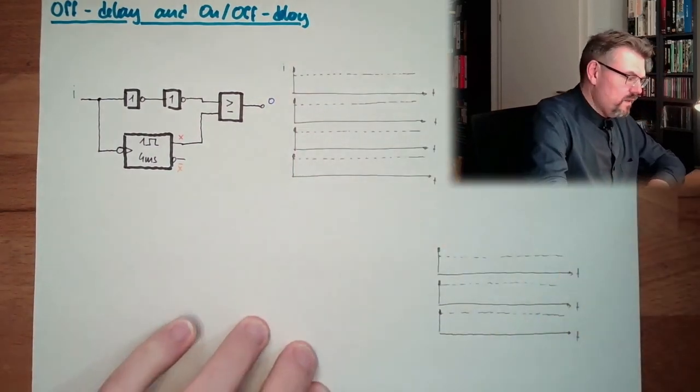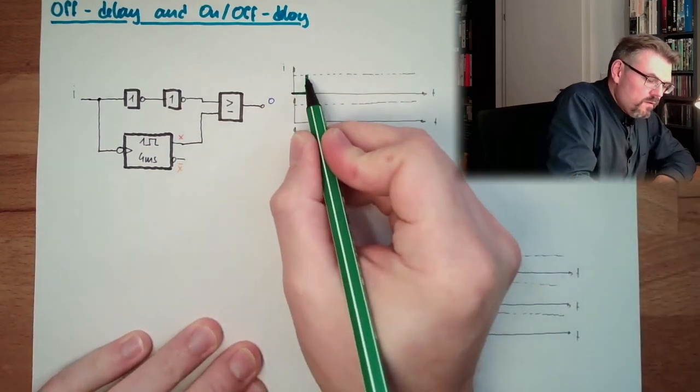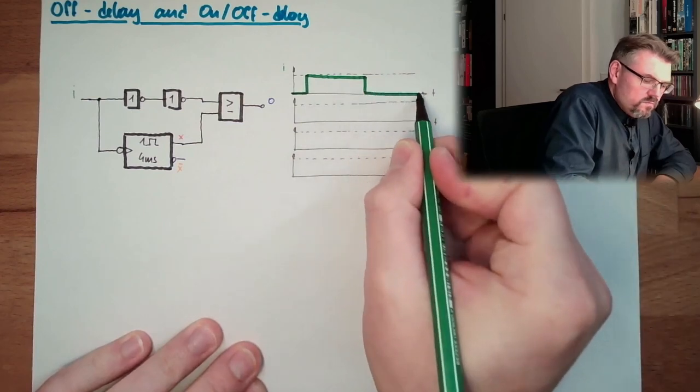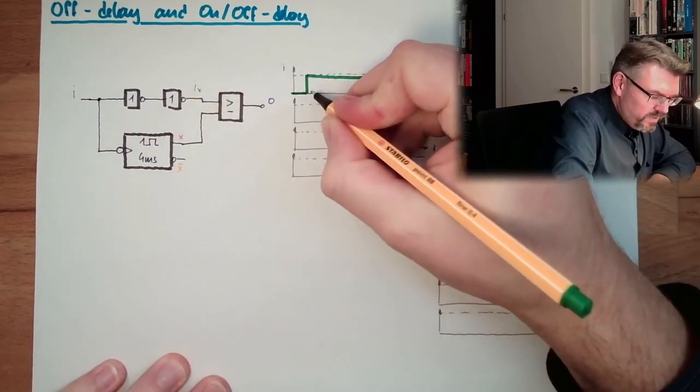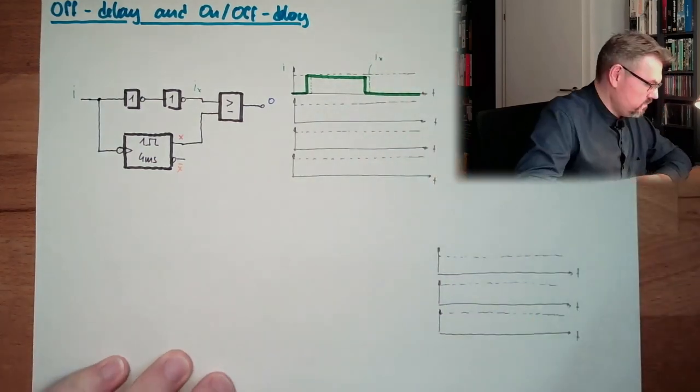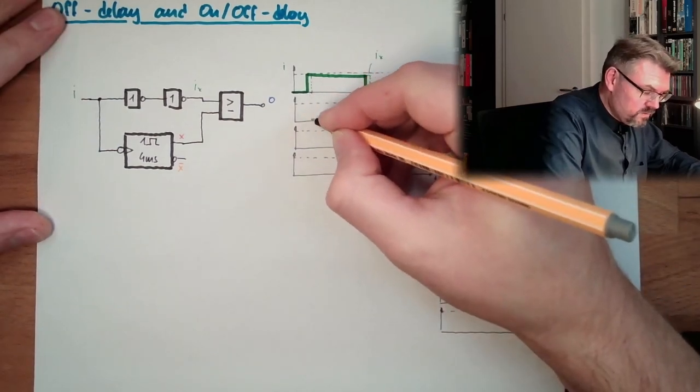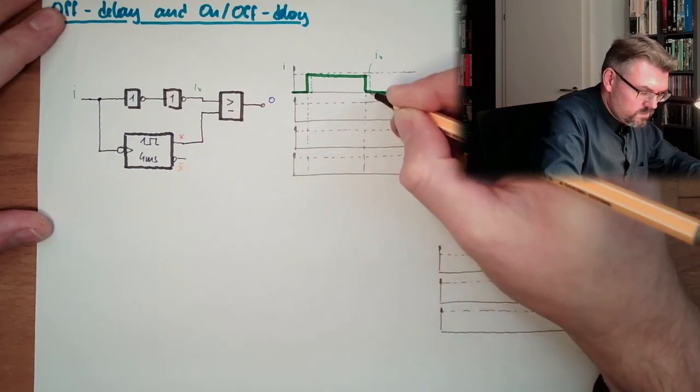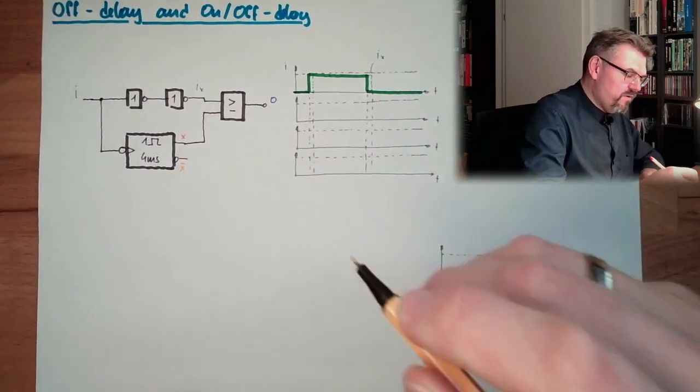our INPUT I is changing to one certain point in time. And another point in time, we change to zero. This is our INPUT. Then our IX here is a little bit later. This is IX. So this is actually the times where those things are switching. Okay, let's have a look at X.